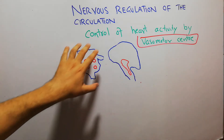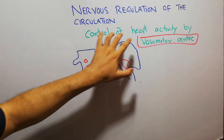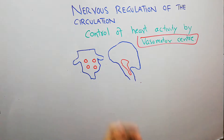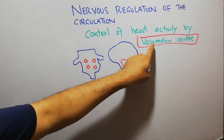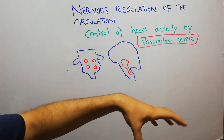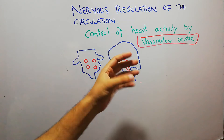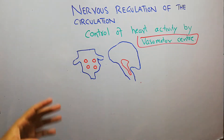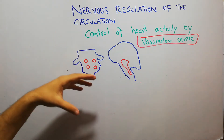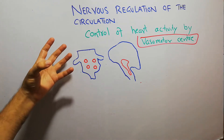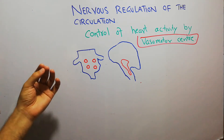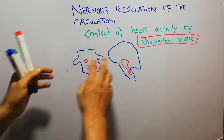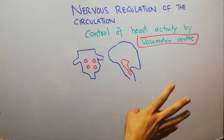In this lecture, we are going to talk about control of heart activity by the Vasomotor Center — how the Vasomotor Center plays its role in controlling heart activity, when there is a need to increase or decrease the heart activity.